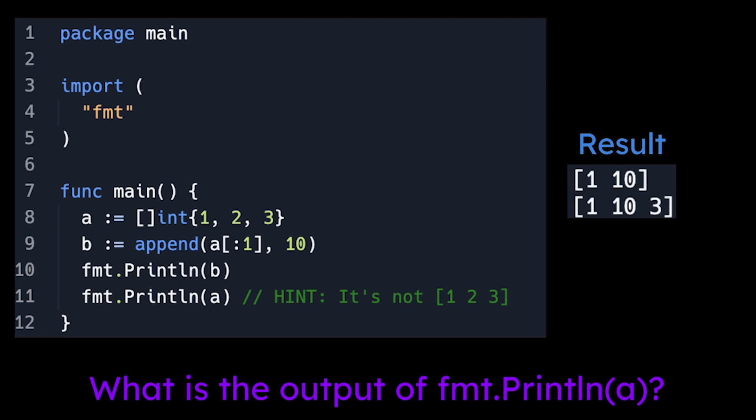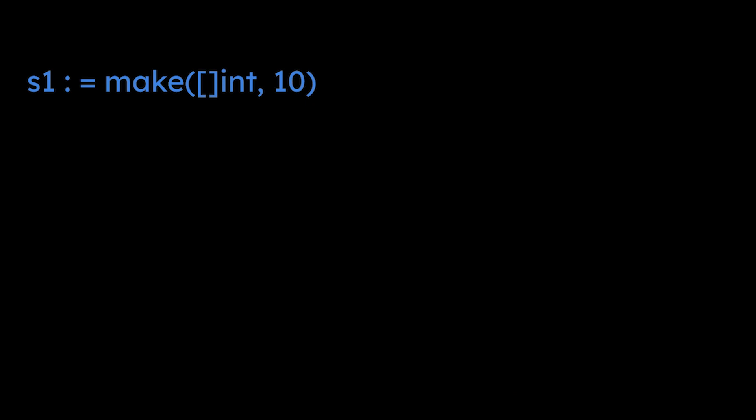At this point, hopefully you have at least read or heard that whenever you create a slice in Go, in memory, Go creates an underlying array. Here we have this slice S1, which we create using the make function.